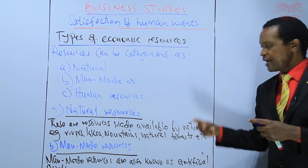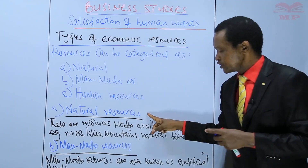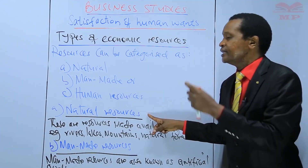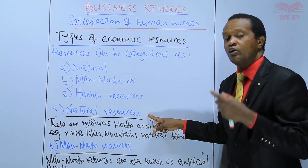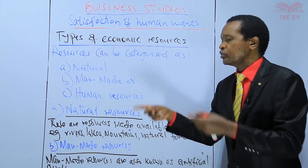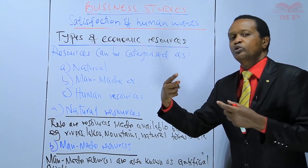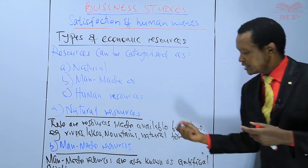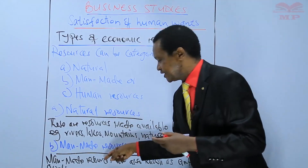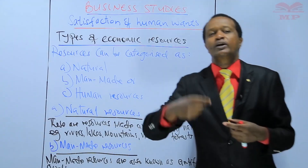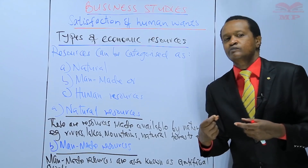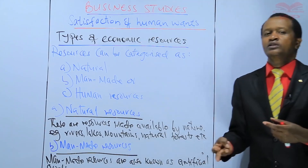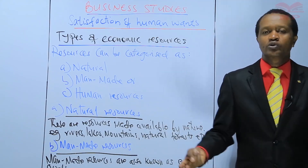Man makes use of natural resources to produce goods that he consumes directly, or he uses these natural resources to produce goods that are used to produce other goods. The goods that man consumes directly are known as consumer goods, and may include food, clothes, televisions, and so on.